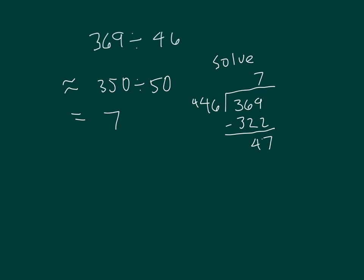So let's resolve it again. 369 divided by 46 is 8 times. 8 times 6 is 48, regroup of 4. 8 times 4 is 32, plus 4 is 36. And so our remainder is 1.